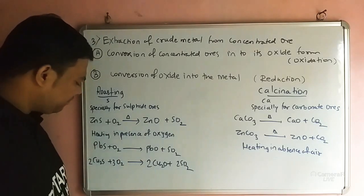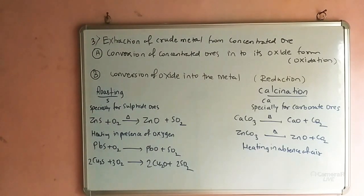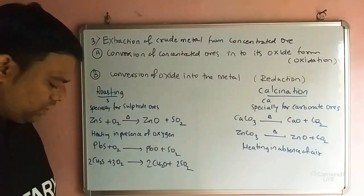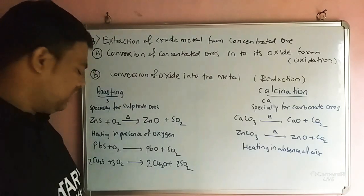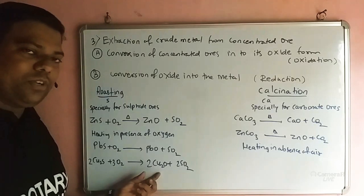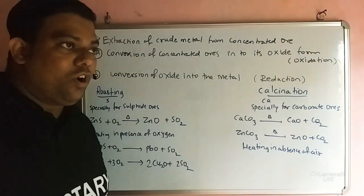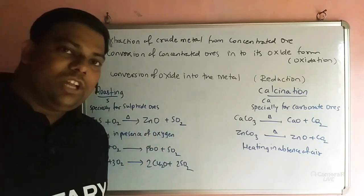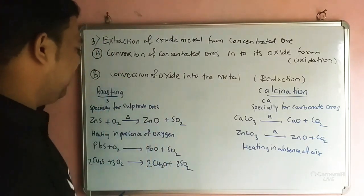Another example: PbS on oxidation converts into PbO along with sulfur dioxide. Cu2S on oxidation gives Cu2O along with sulfur dioxide. The sulfur dioxide produced during roasting is utilized for the manufacturing of sulfuric acid.